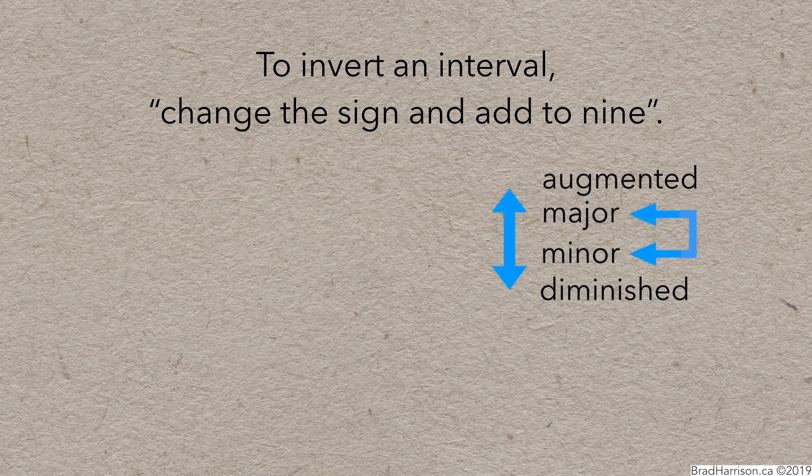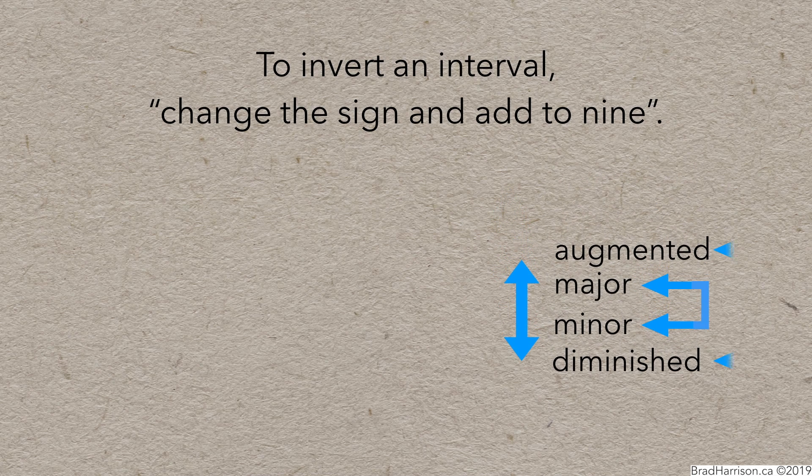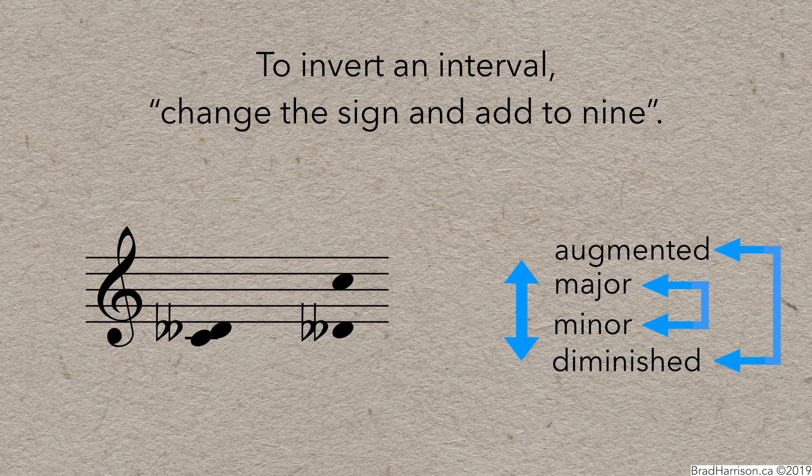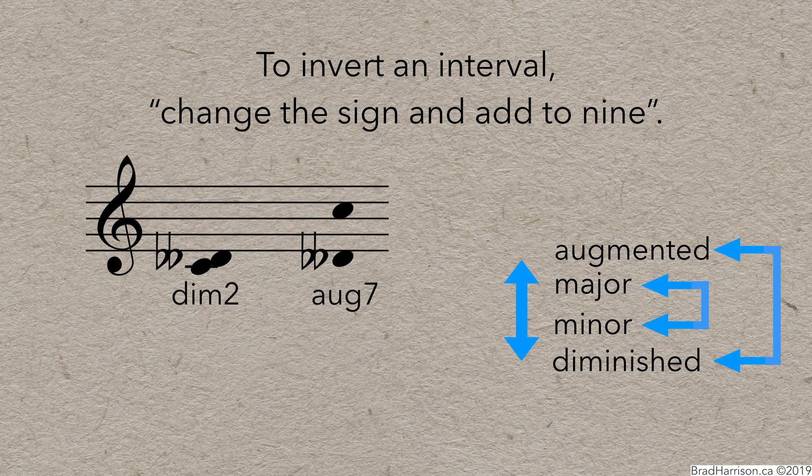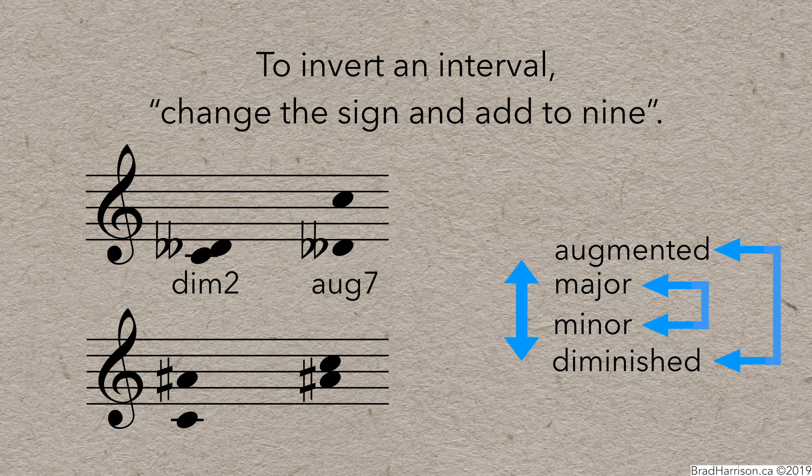Augmented and diminished intervals work similarly. They invert to each other, and the numbers will add to 9. C to D double flat is a diminished 2nd. If you invert it, you'll get an augmented 7th. Same for C to A sharp. That's an augmented 6th, and the inversion will be a diminished 3rd.